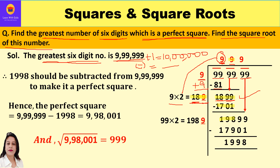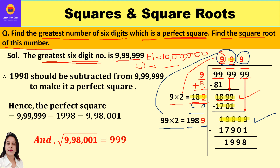We find the difference: 1899−1701=198. Bring down the next period 99, giving new dividend 19899. For the new divisor, we take the current quotient 99 and double it: 99×2=198, leaving a blank. We could also add 9 to 189 to get 198. By trials, the number 9 fills the blank: 1989×9=17901, which is less than 19899. So the divisor is 1989, the quotient digit is 9, and the product is 17901.